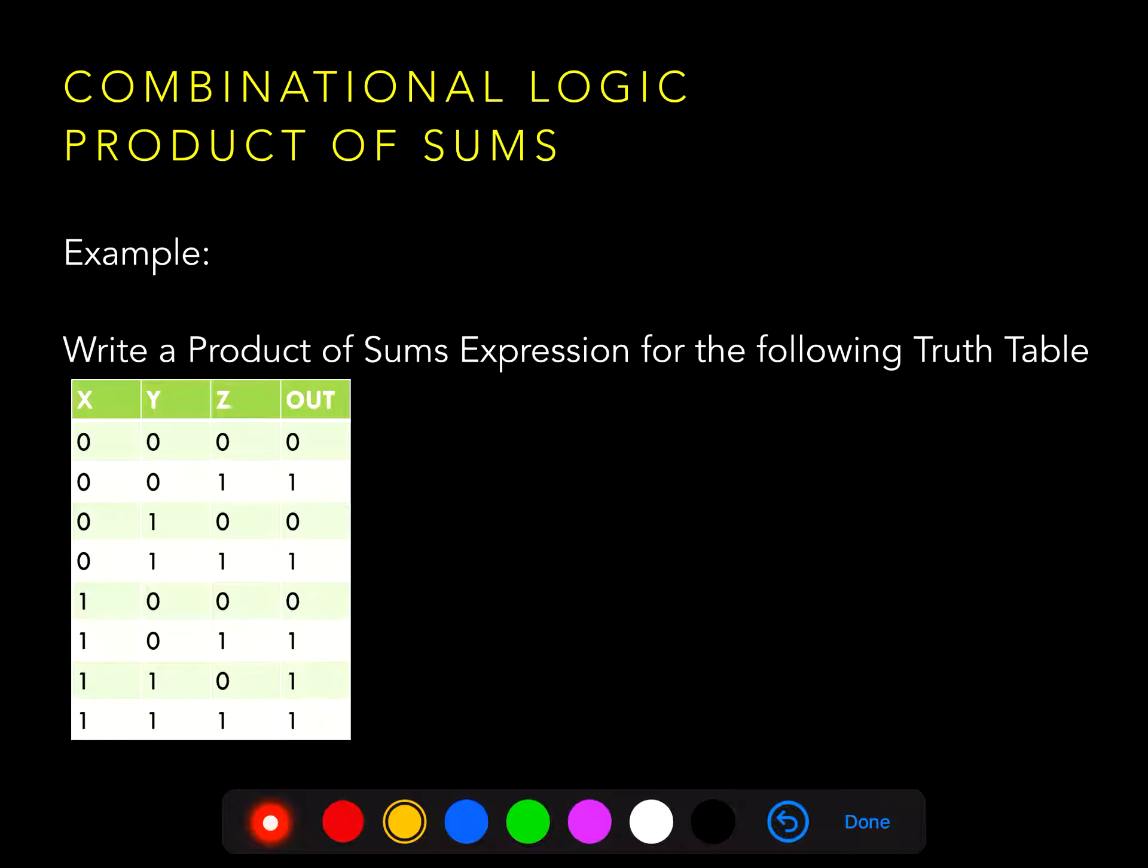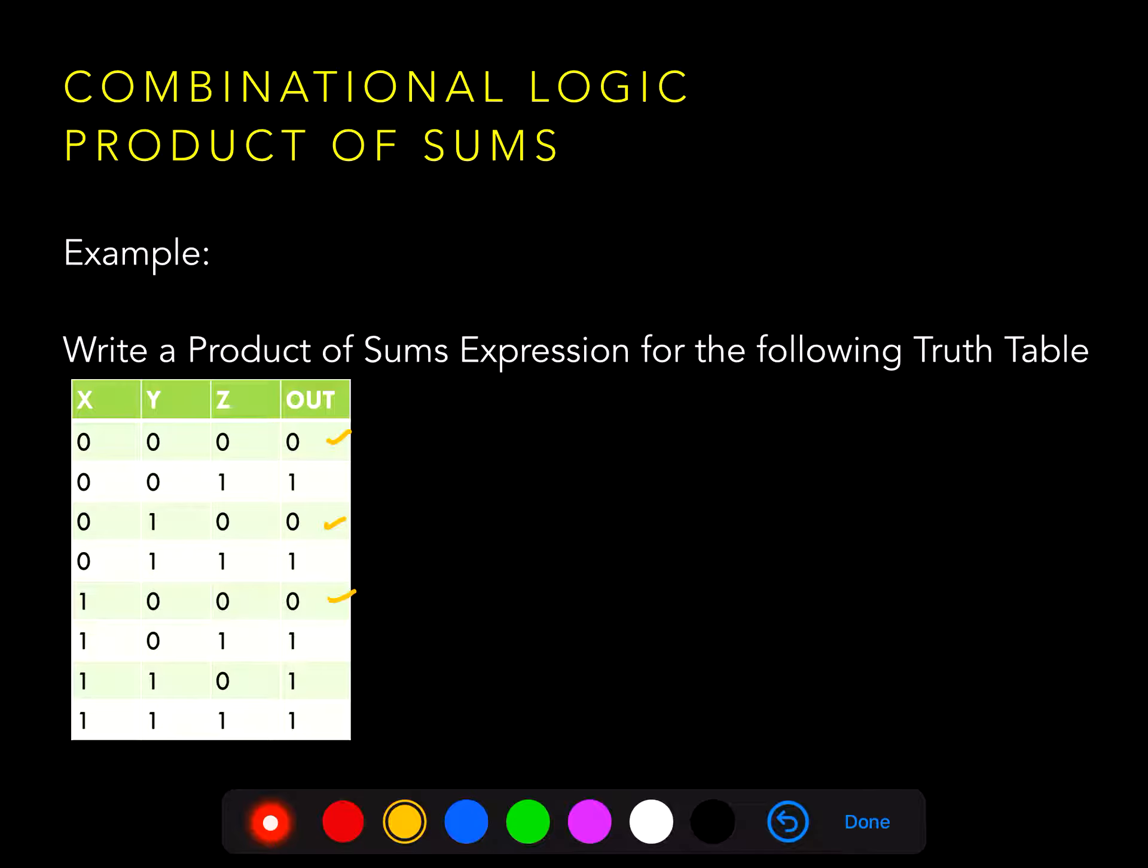In this next example, we have three possible inputs in a truth table that has eight input combinations, which produce three lines in the truth table that have a zero at the output. We can come up with a product term for each line in the truth table that produces a zero at the output, using the same technique we did in the previous slide.